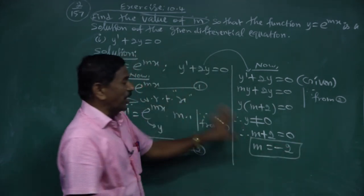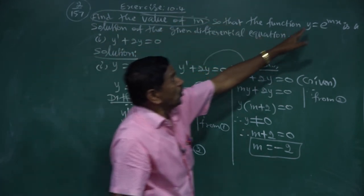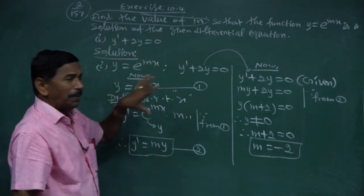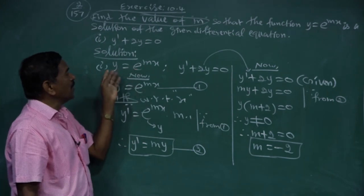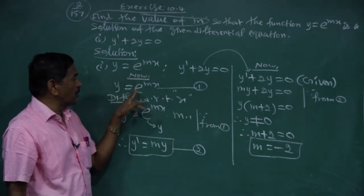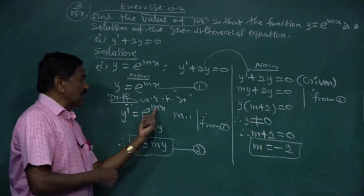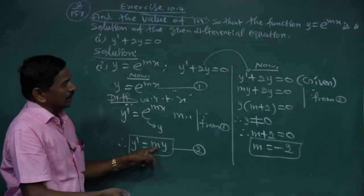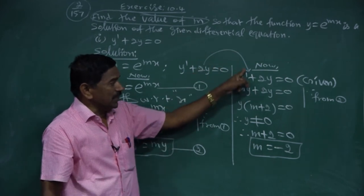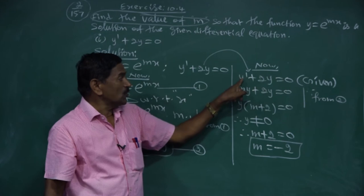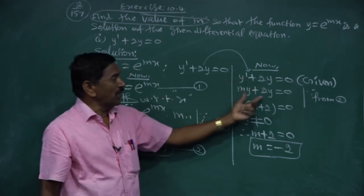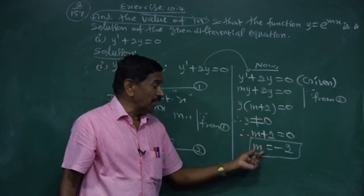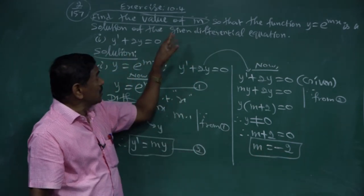So m = -2. To summarize: take the given curve y = e^(mx), differentiate with respect to x, substitute e^(mx) = y to get y' = my, then substitute into the given differential equation, take y common, and since y ≠ 0, solve the bracket to find m = -2.